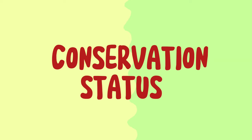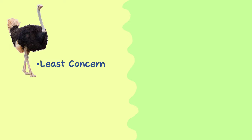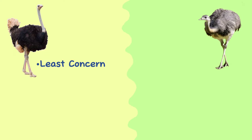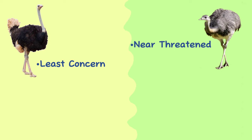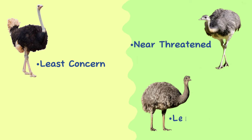Conservation status. Ostriches are listed as a species of least concern on the IUCN Red List, which means they are not currently facing a high risk of extinction. The greater Rhea is listed as near threatened due to habitat loss and hunting, while the lesser Rhea is considered of least concern.